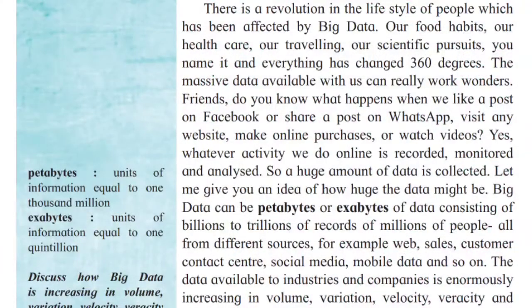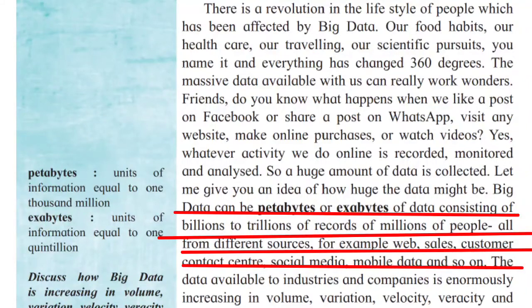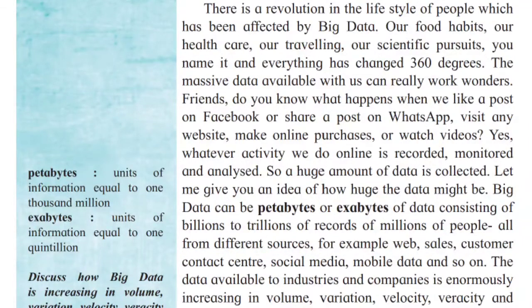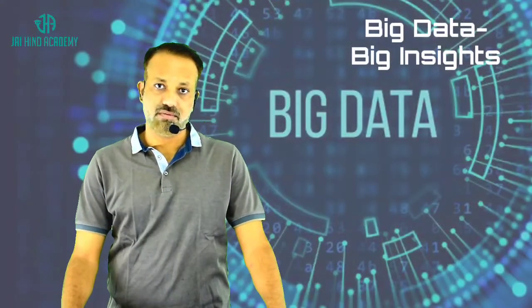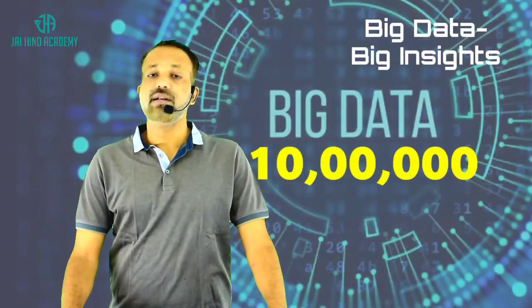This is an example of how big data can be. Big data can be petabytes or exabytes of data consisting of billions to trillions of records of millions of people, all from different sources. He gives an example: big data can be petabytes. Petabytes means units of information equal to one thousand million. One million means ten lakh, correct? Ten lakh has six zeros.